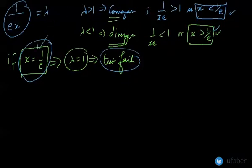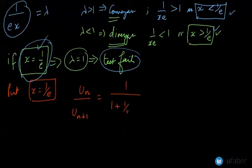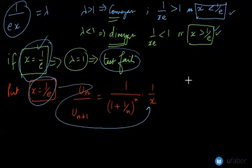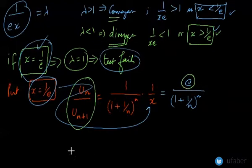Let us put x = 1/e. The value of u_n / u_{n+1} was 1 / (1 + 1/n)^n · (1/x). Substituting x = 1/e, we get e / (1 + 1/n)^n. The ratio u_n / u_{n+1} now consists of a term with an exponent.